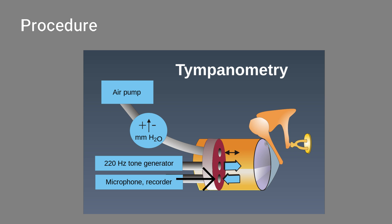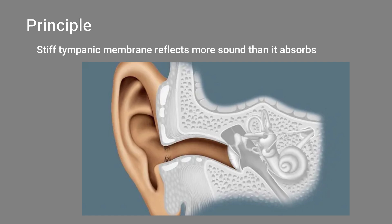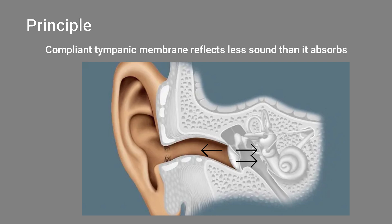When sound energy passes through the tympanic membrane into the middle ear and comes back, normally when sound strikes the tympanic membrane, some of the sound energy is absorbed while the rest is reflected.